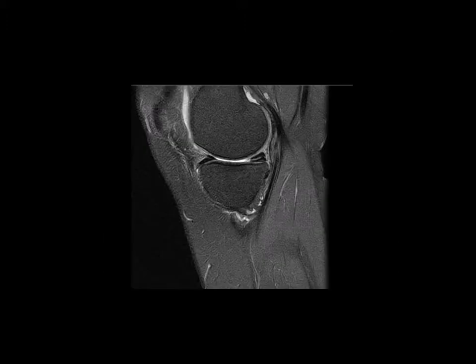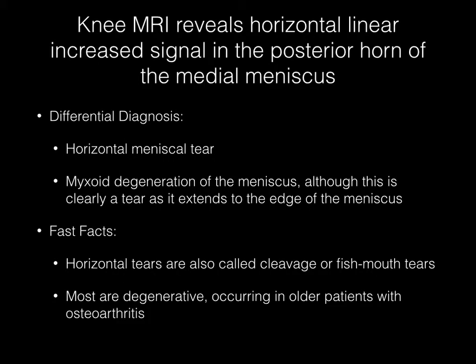Now pause your media player. A sagittal knee MR image demonstrates a horizontal linear focus of increased signal in the posterior horn of the medial meniscus. The diagnosis should include horizontal meniscal tear. Myxoid degeneration of the meniscus could also be mentioned, although this is clearly a tear here as it extends to the edge of the meniscus.